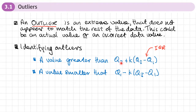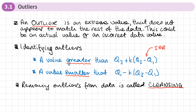By doing this calculation, anything larger than the upper bound or anything smaller than the lower bound will be considered an outlier. When we identify outliers and remove them from our data, this process of removing outliers is called cleansing.